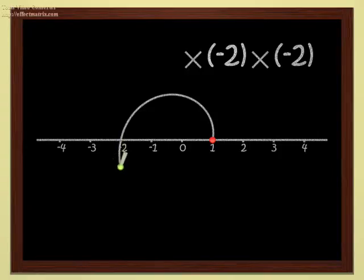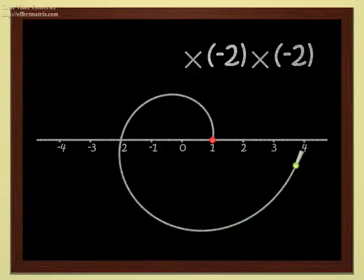And if you multiply again by minus two, you have to do the same thing. Change sides with respect to the origin and double the distance from the origin. You get four, of course. If we multiply twice by minus two, we have multiplied by four.